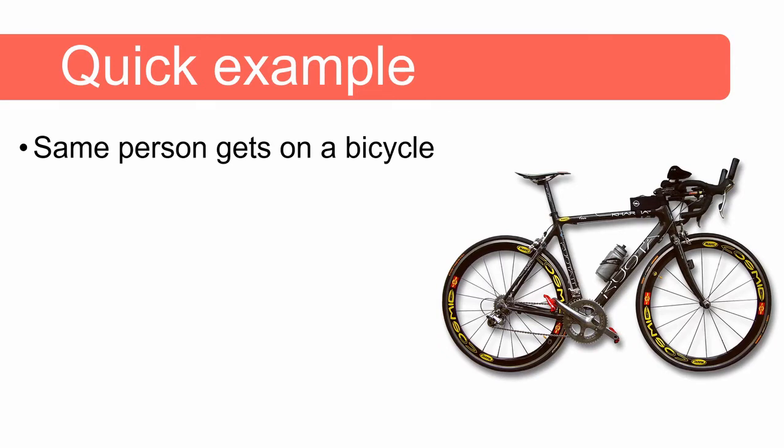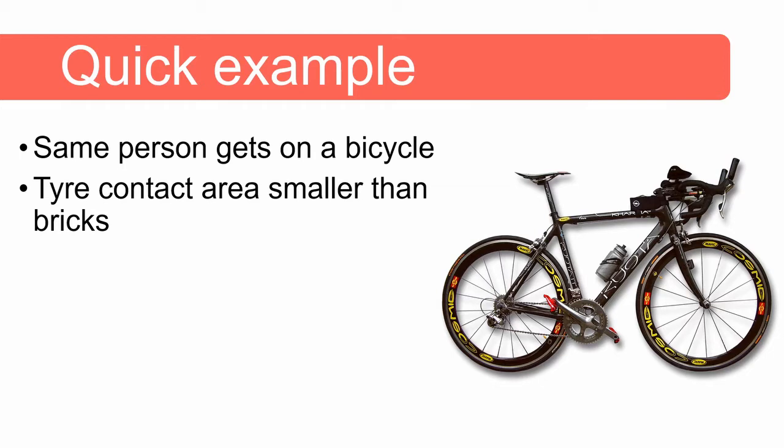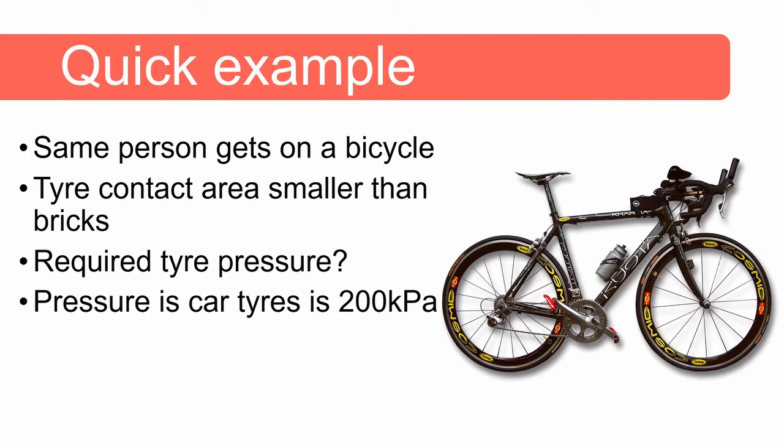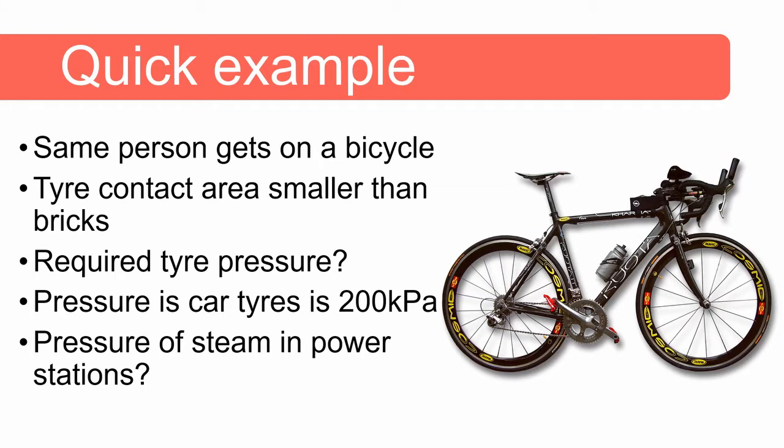Now imagine the same person gets on a bicycle. The tire contact area is a lot smaller compared to the bricks. What then will be the required pressure inside if the contact area is so much reduced? The air in car tires are approximately 200 kilopascal and what do you imagine is the pressure of steam in a power station? Let me know in the comments below.